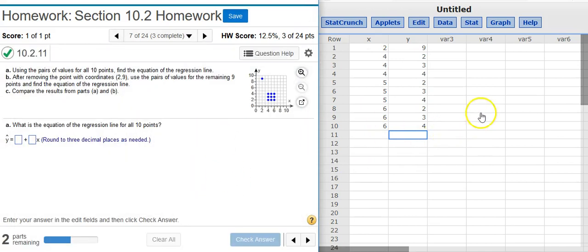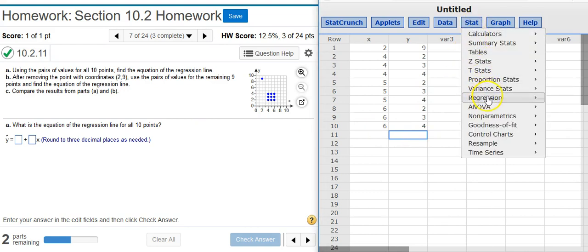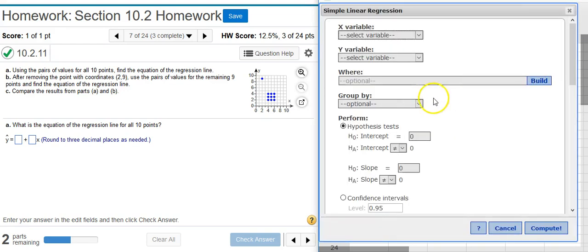Now I'm ready to make my regression line. To do that I go to Stat, Regression, Simple Linear. Here's where labeling those columns become very useful. The X variable is the X, the Y variable is the Y. And that's all I really need to get the actual regression equation. So I'm going to hit Compute.